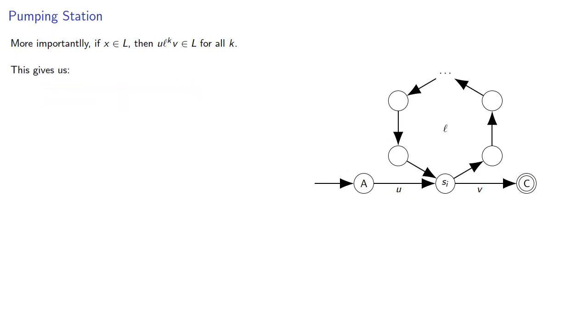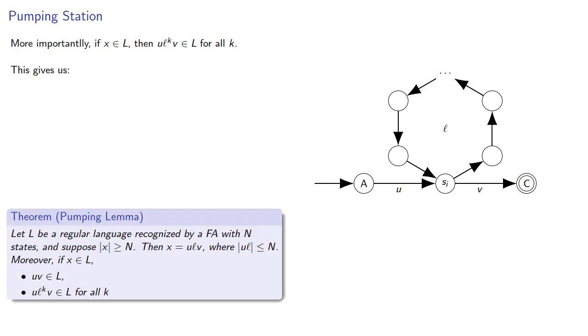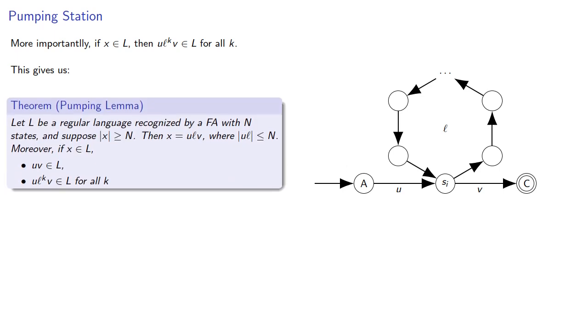And this gives us what's known as the pumping lemma. Let L be a regular language recognized by a finite automaton with N states. And suppose we have a string whose length is at least N. Then x can be decomposed as ulv, where the first part of the string has length less than or equal to N. Moreover, if x is in the language, uv is in the language, and u l^k v is also in the language for all k.